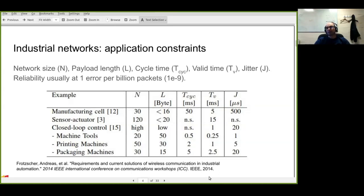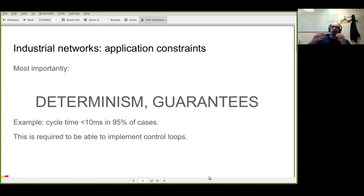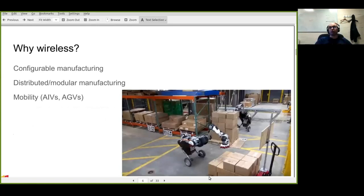For response time, a controller issues a command and devices in the factory need to respond — we're talking anything from a few tens of milliseconds down to a few tens of microseconds. Very tight response times need to be accommodated. Most importantly, we need a deterministic communication channel, because developing control loops and control algorithms on top of a communication channel requires guarantees on the transmission of information.